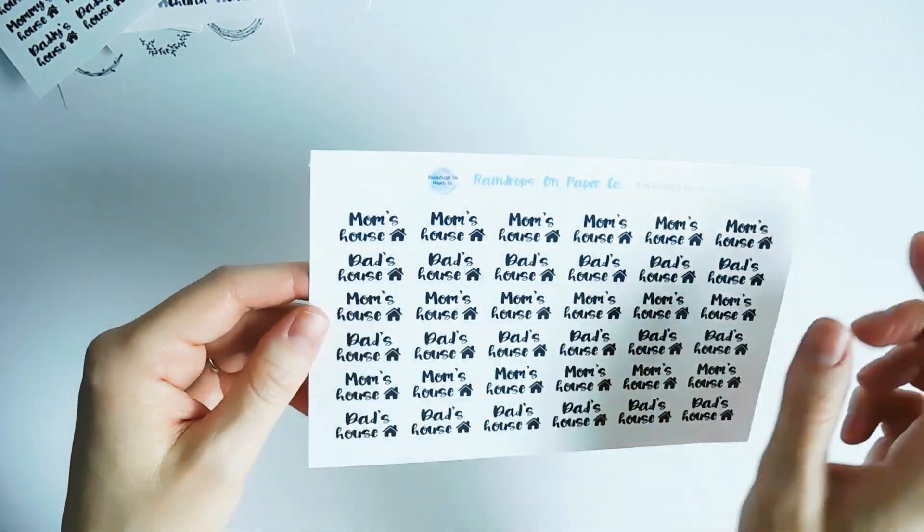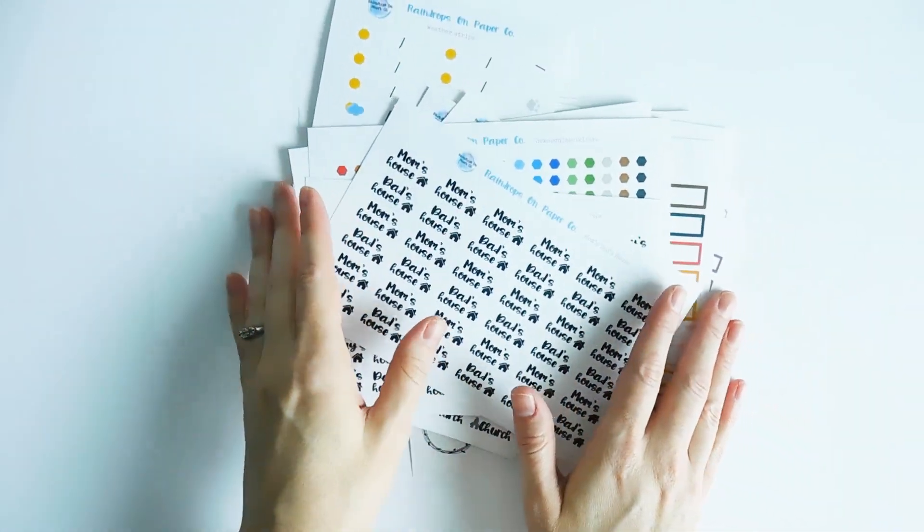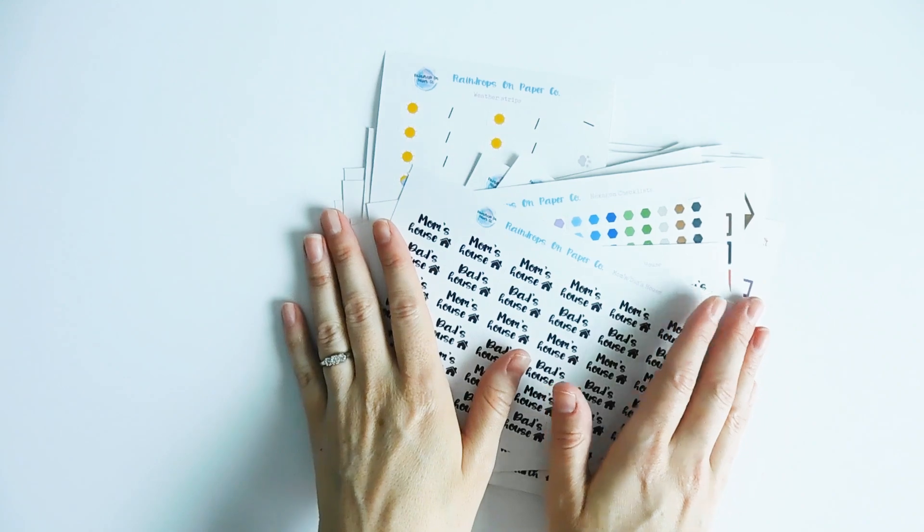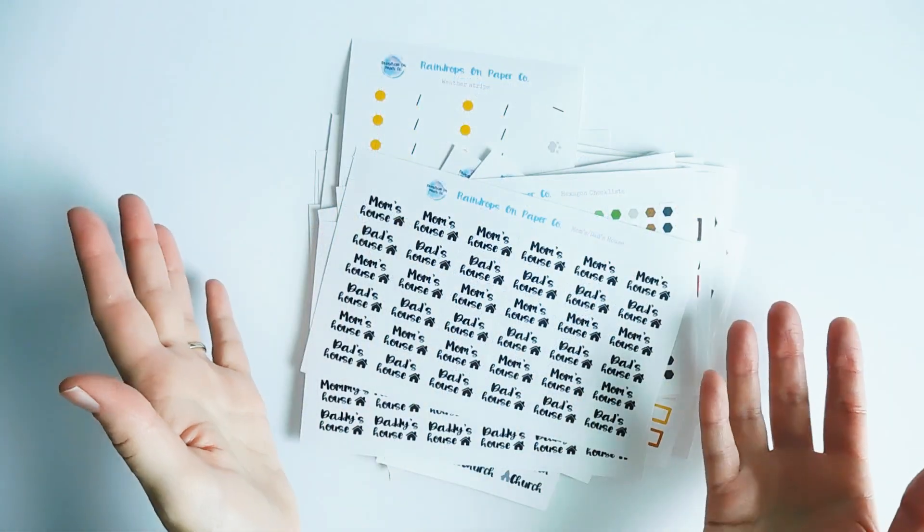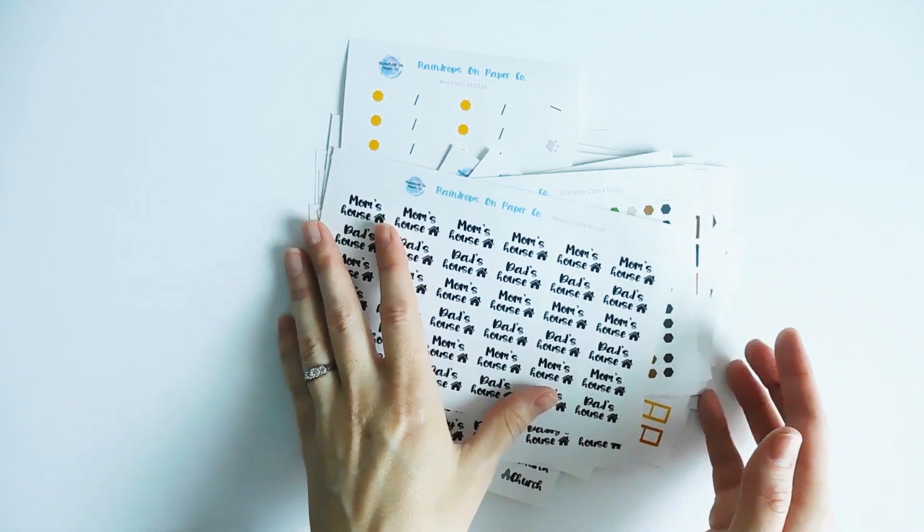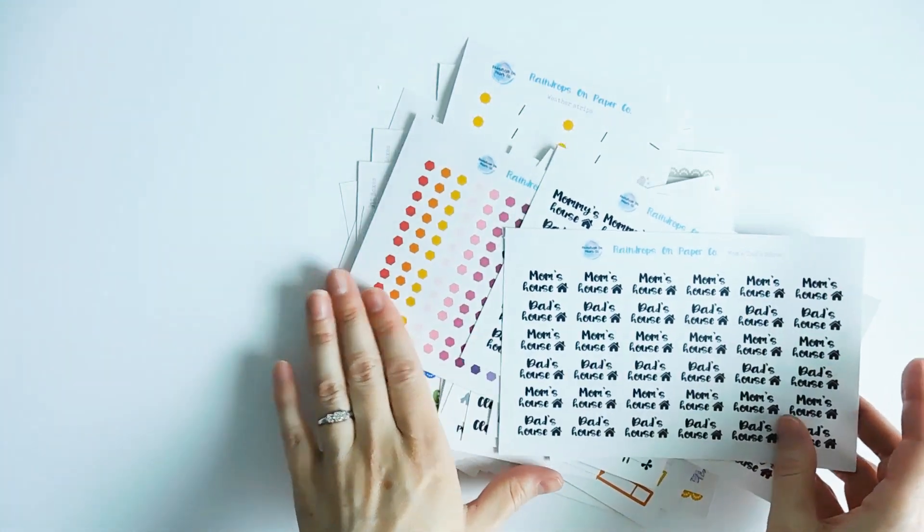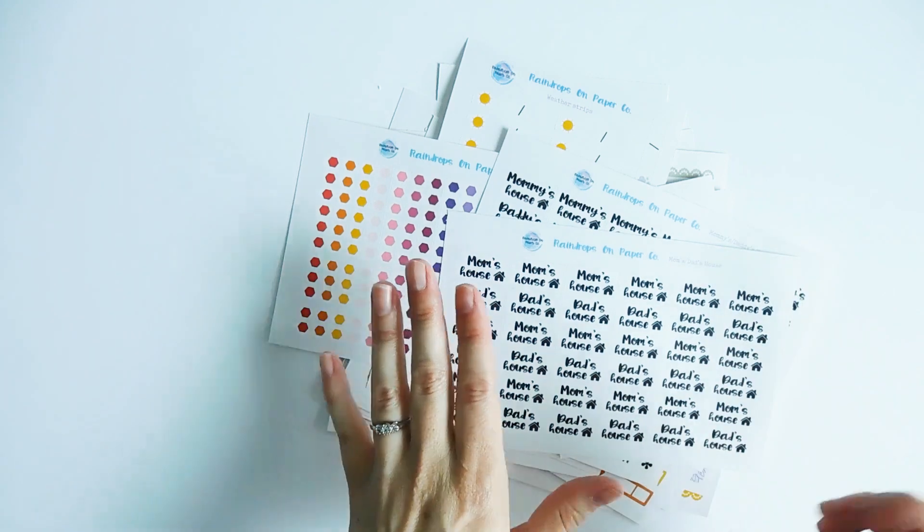So those are the stickers that I wanted to show you today. I've got several more options like desk flat lays and other things. And Raindrops on Paper Coat is a ready to ship shop, so you will get your order fairly quickly. So if you found something that you like here, head over and I'll leave the link below in the description, and I'll see you in my next video.